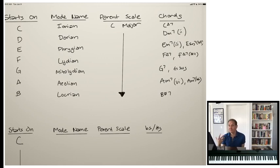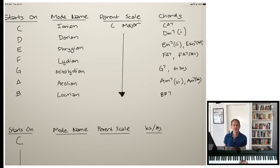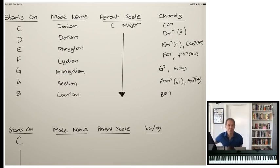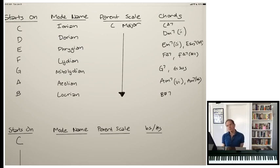We'll start with Ionian, which starts and ends on C. We always name the mode after the note it starts and ends on. What's confusing is that we also have a parent scale — the scale upon which the mode is based. What key signature are we applying? How are we getting the sharps and flats? Often when we learn, we start with modes of the C major scale. So as I start on D, the parent scale remains the same — I'm still using the key signature of C major, the notes of the C major scale, and I can start and end on different notes to get different modes.